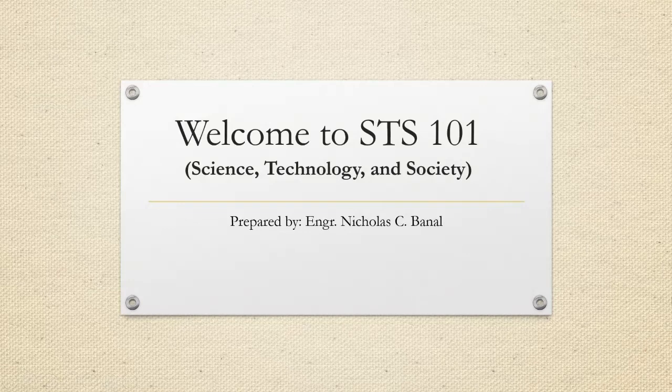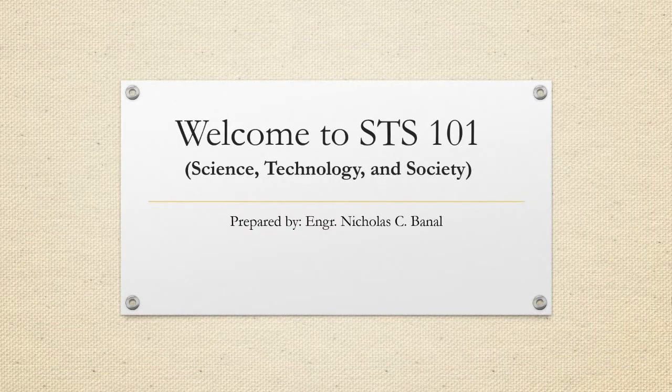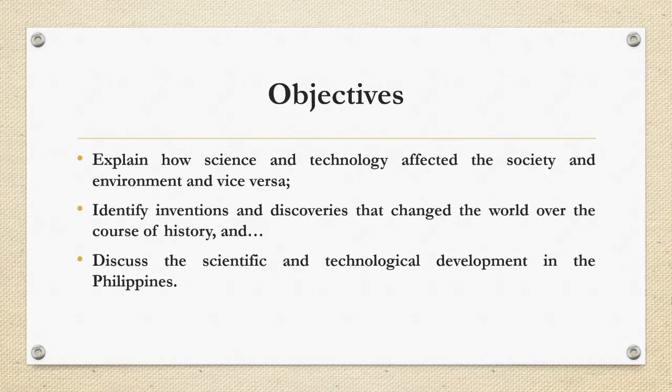Hi, hello! Welcome to STS 101 — Science, Technology, and Society. Let's talk about Chapter One. Chapter One covers three precedents in the course of science and technology. The objectives are: first, to explain how science and technology affected society and environment and vice versa; second, to identify the inventions and discoveries that changed the world over the course of history; and third, to discuss scientific and technological development in the Philippines.